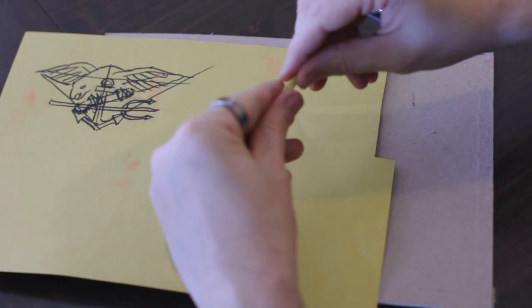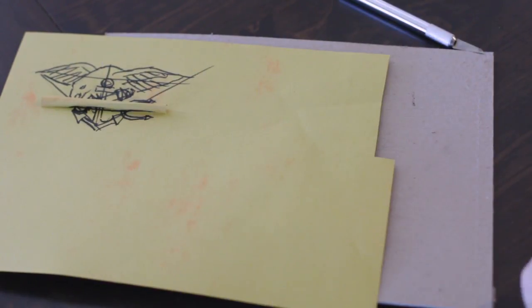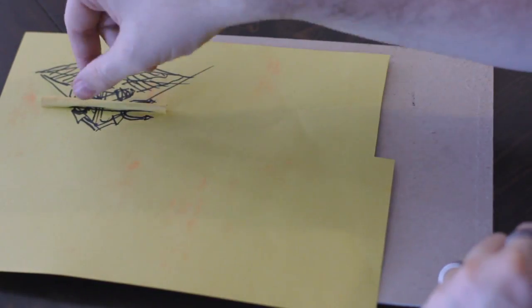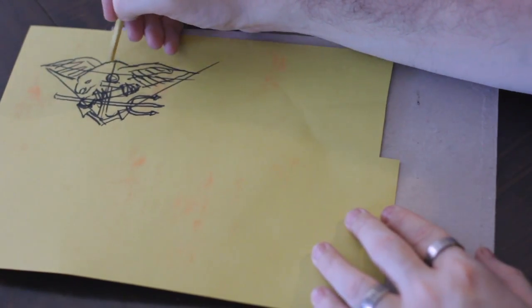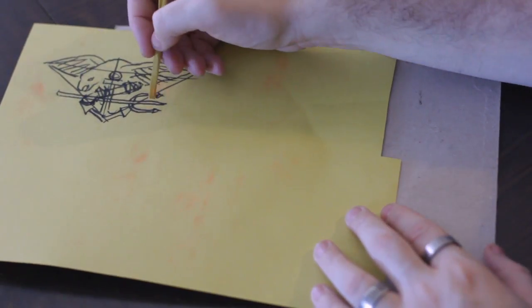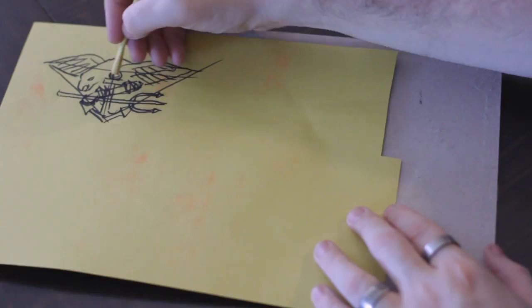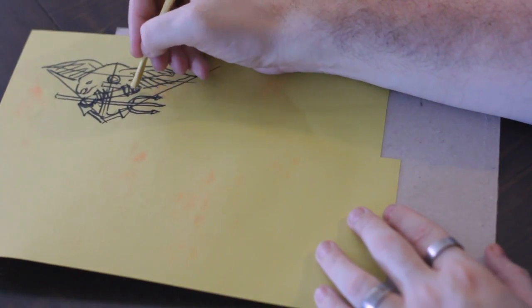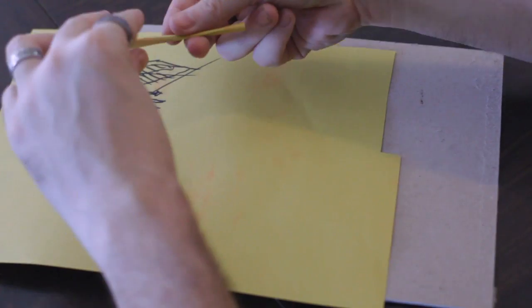But first what you want to do is you want to take more paper and you want to basically outline all of these shapes. Fortunately for us, these are all cylinders. This right here, the bird's head and neck is a cylinder. The trident is a cylinder here, the trident handle. The pistol is a cylinder. Heck, even the claws are cylinders. So you're going to make a bunch of cylinders out of paper.